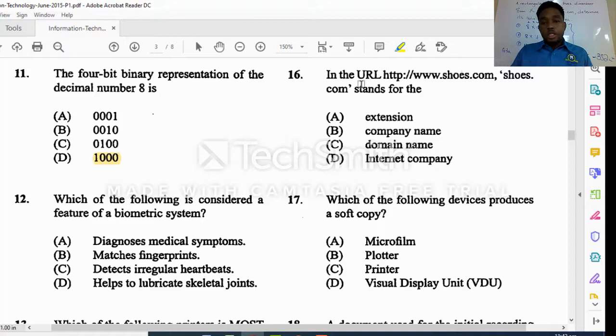It says in the URL http://www.shoes.com, shoes.com stands for what. Shoes.com stands for your domain name, so it's your domain that you could represent like an IP address. So the website name would be the domain name here. It's not an extension, not a company name, not an internet company.